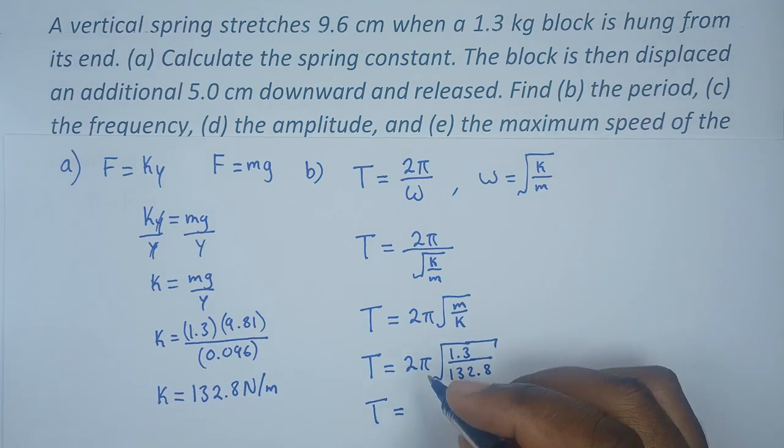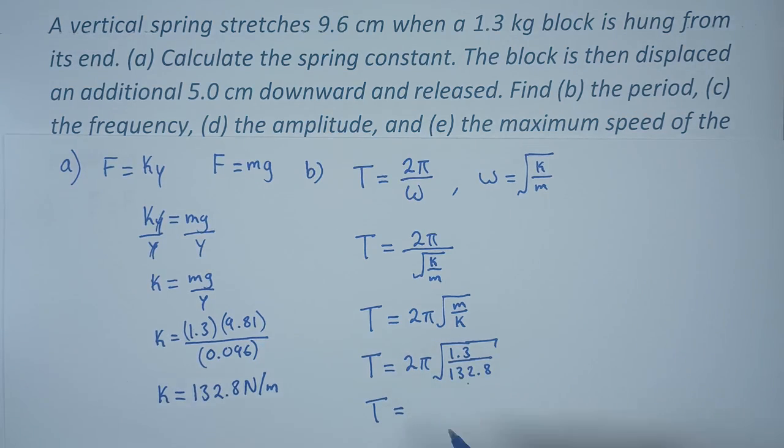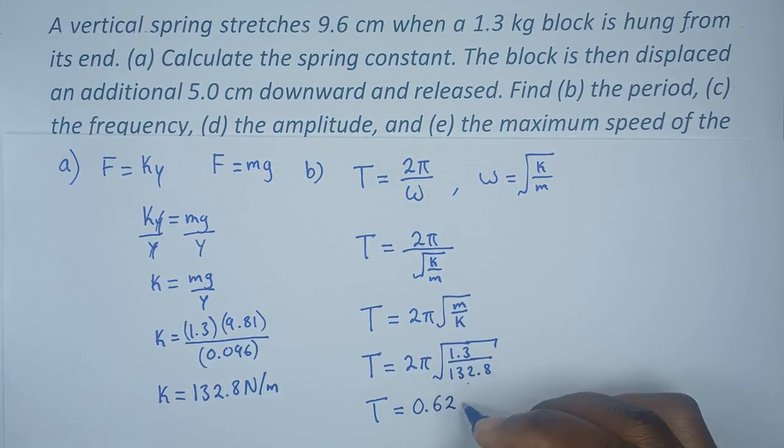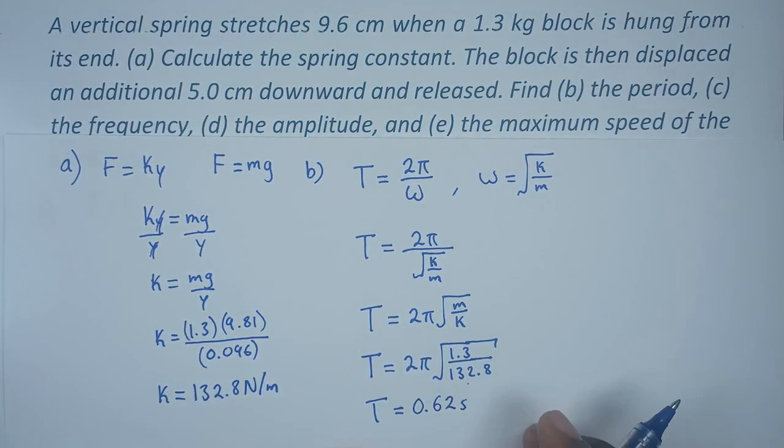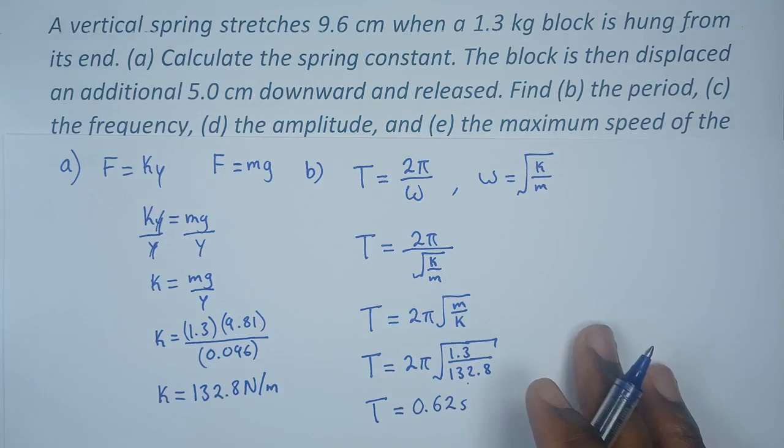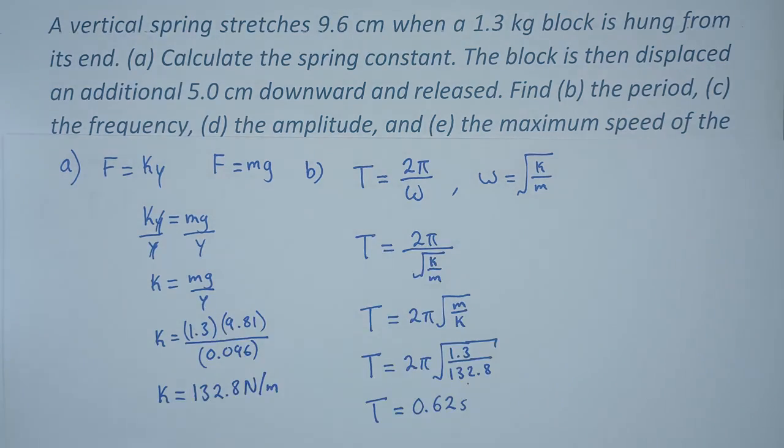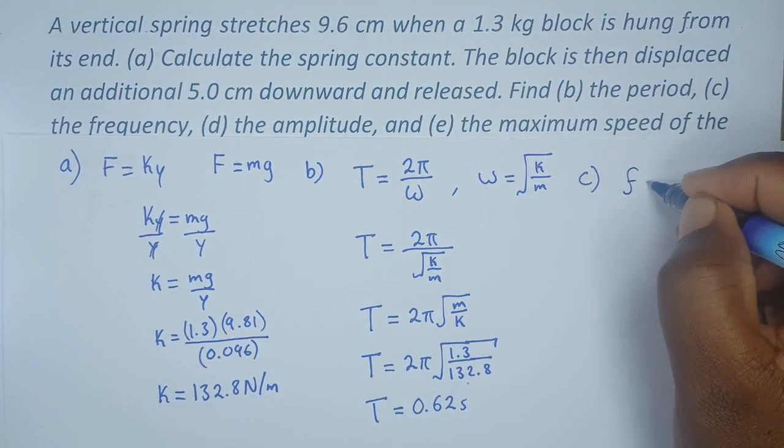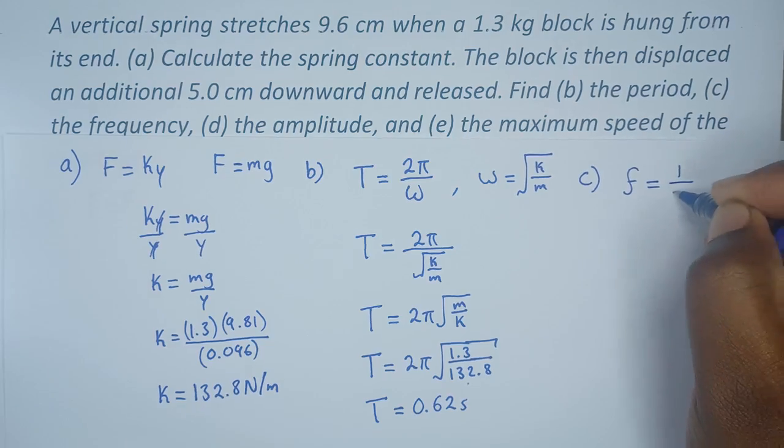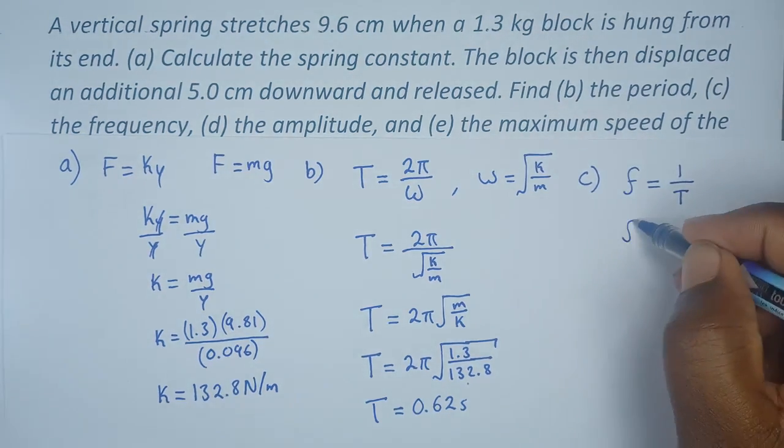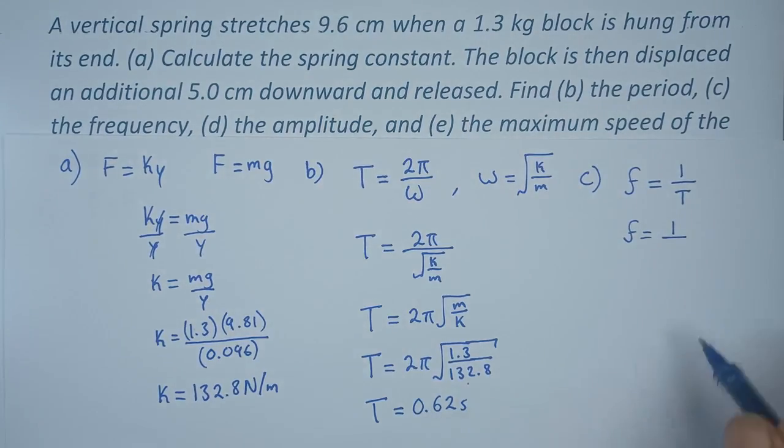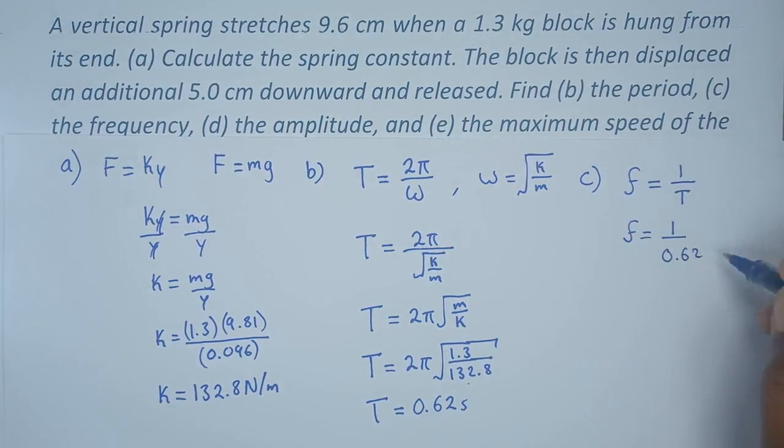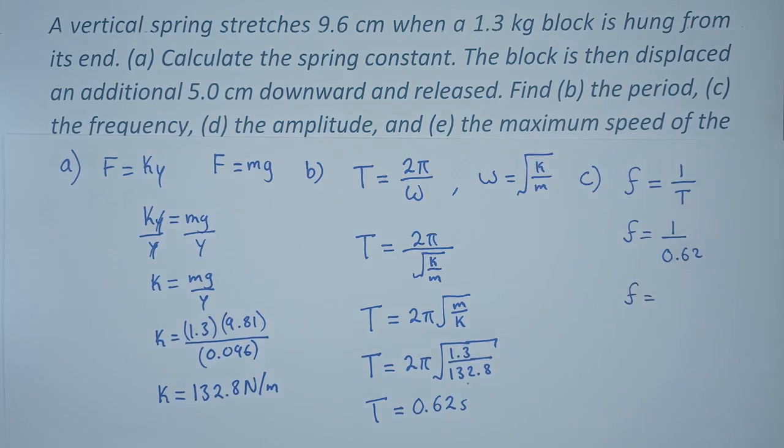Now that we have the period, we can easily calculate the frequency, which is question c. Frequency is given by 1 over the period, so frequency in this case is 1 over 0.62. We obtain a frequency of 1.61 hertz.